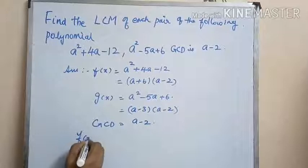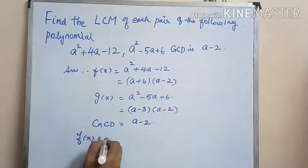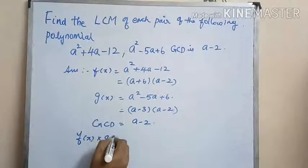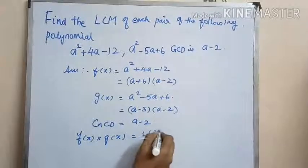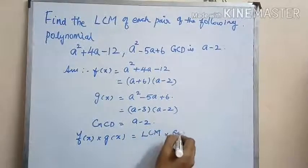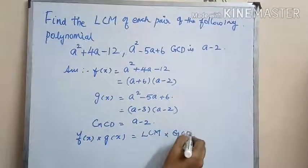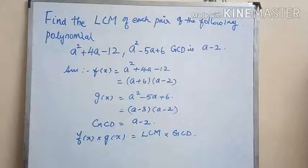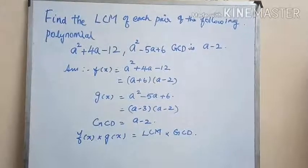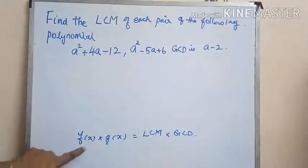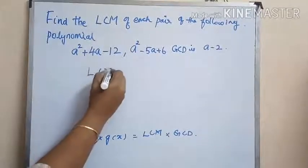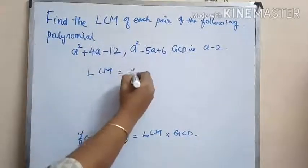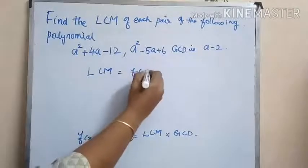We know that f(x) into g(x) is equal to LCM into GCD, from which we can get that LCM is equal to f(x) into g(x) divided by GCD.